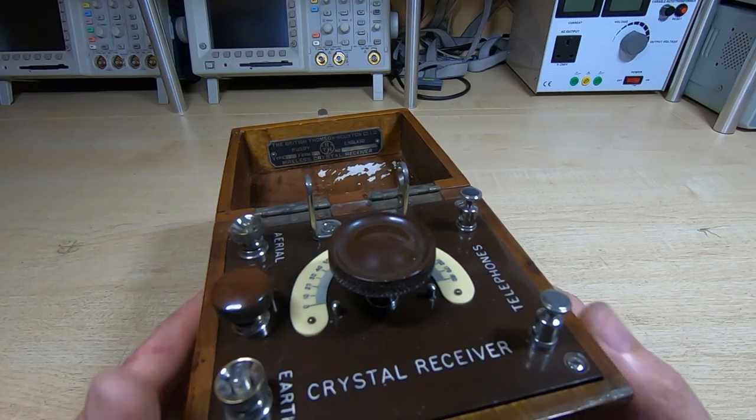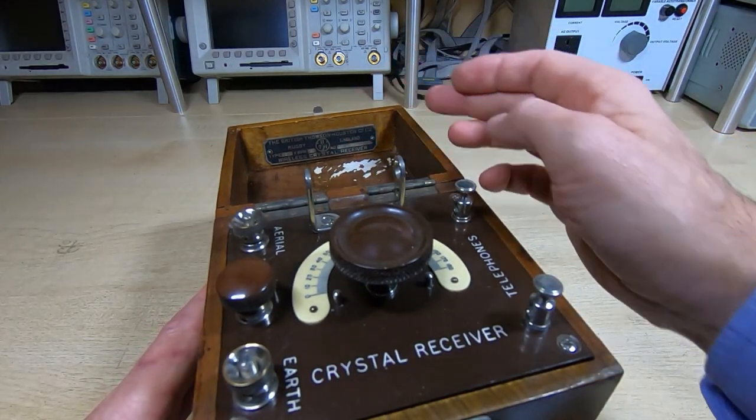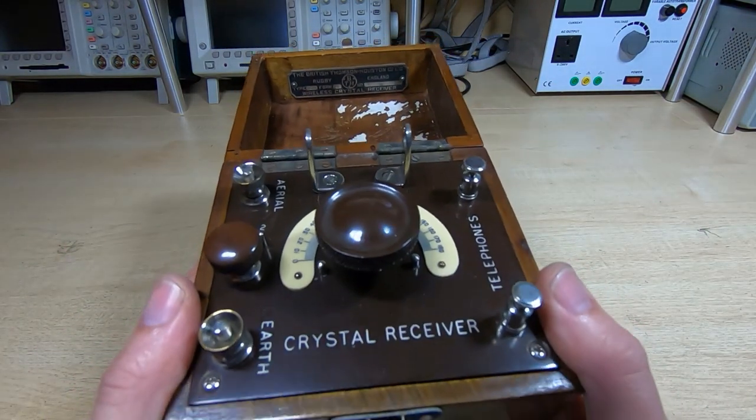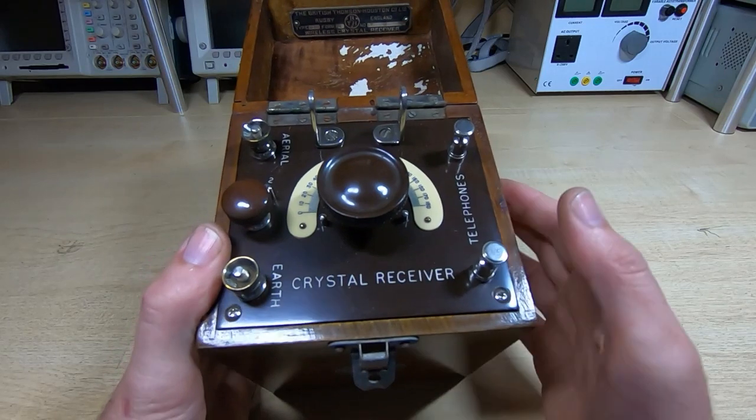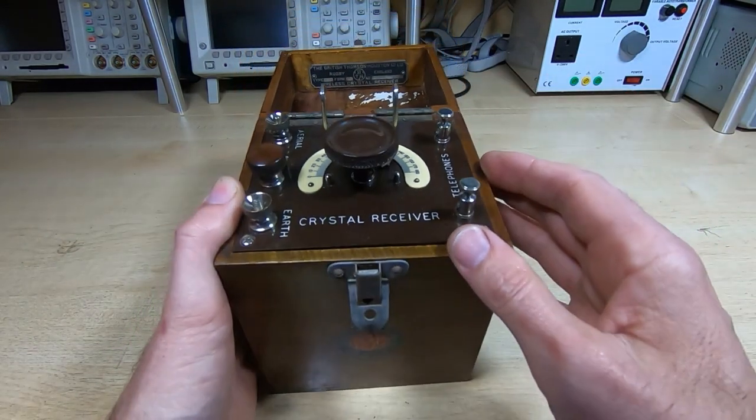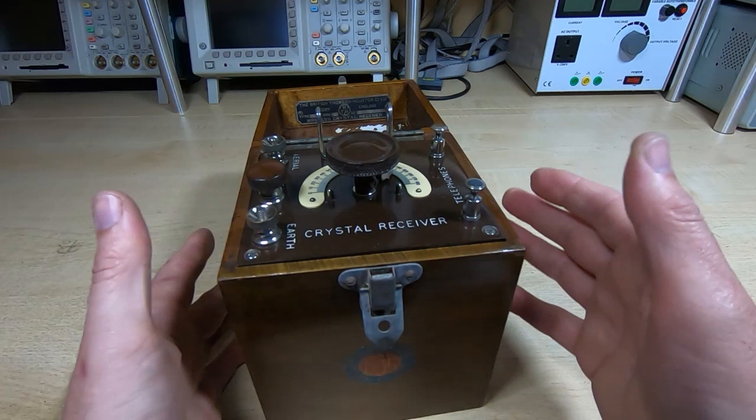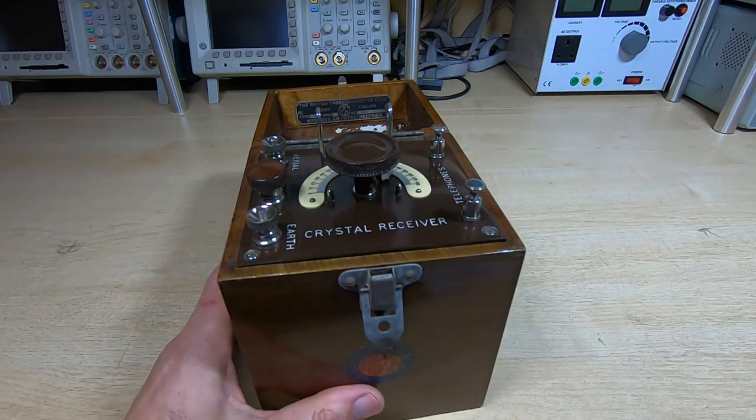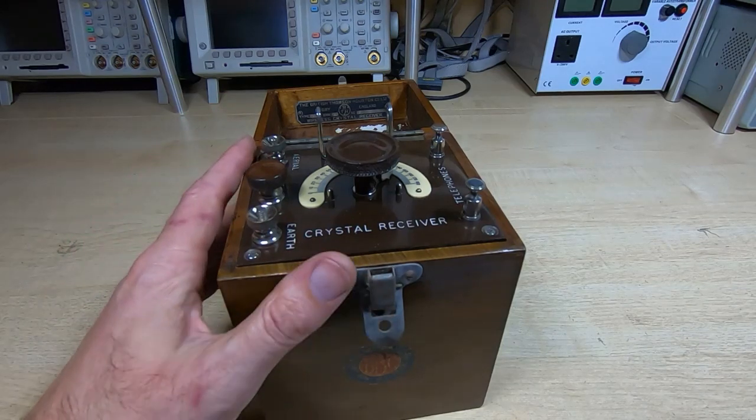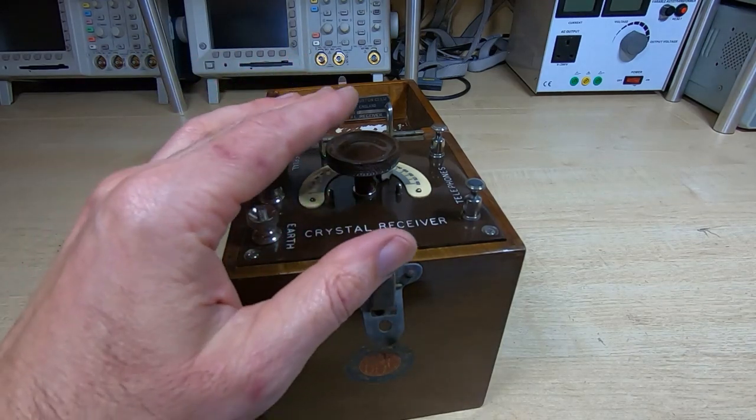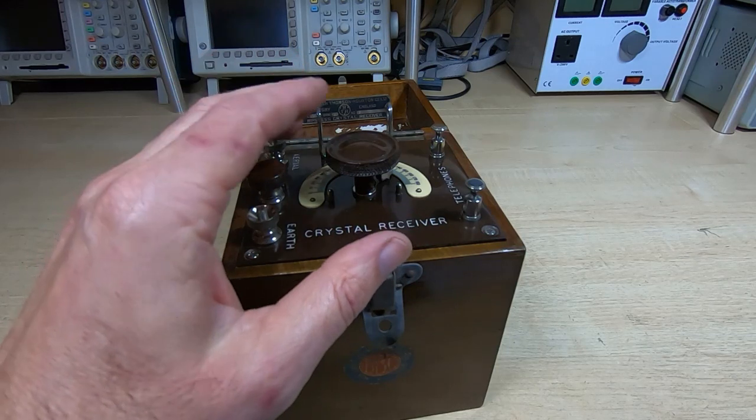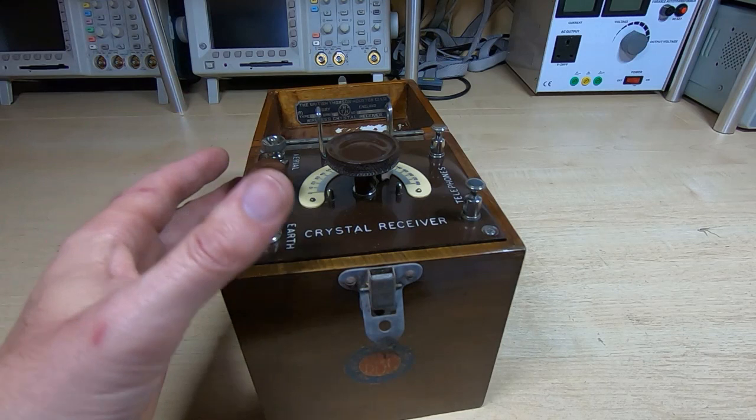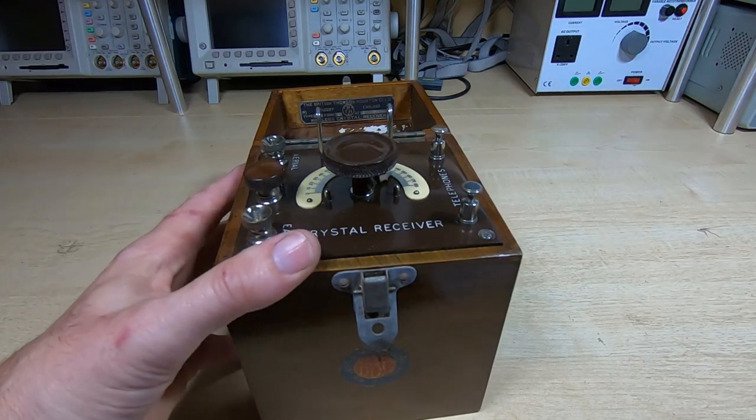The Type C was made in various formats, which is what a form refers to. This particular one is quite simple and very nicely made. The frequency range was specified in wavelength back then, around 300 meters to 450 meters, which equates to approximately 650 kilohertz up to a megahertz.